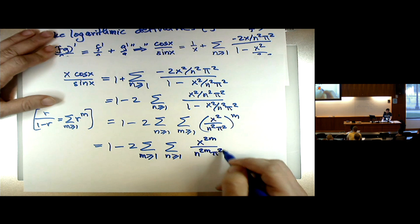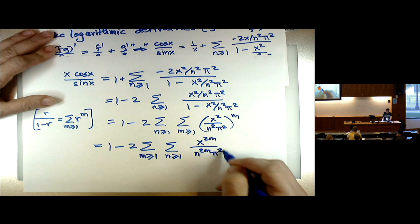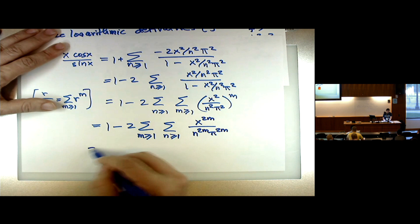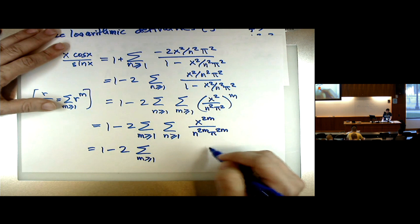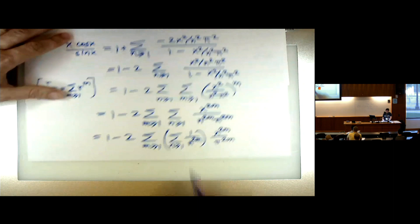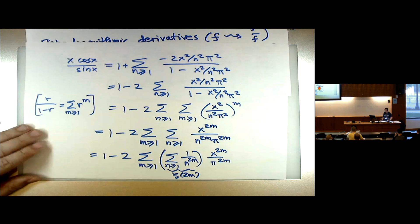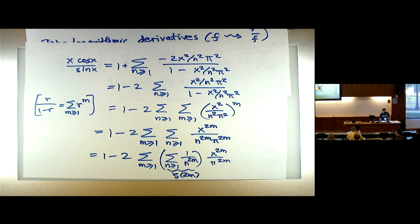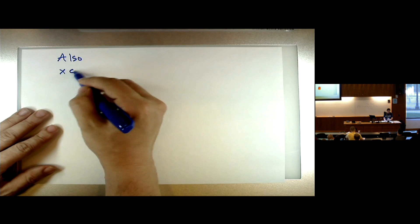If only there were another way to write x·cos(x)/sin(x), we'd get a formula. And there is another way! So we get x·cos(x)/sin(x). The coefficient of x^{2m} is −2·zeta(2m)/π^{2m} from the first formula.